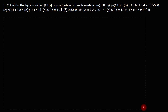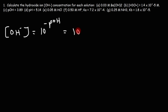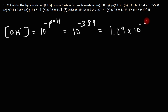Now let's move on to part C. For this one we're given the pOH of the solution. To get the hydroxide concentration from pOH, it's simply 10 to the negative pOH, which is 10⁻³·⁸⁹. That equals 1.29 × 10⁻⁴. That's how you calculate the hydroxide ion concentration if you're given the pOH of the solution.